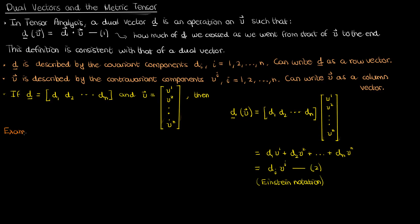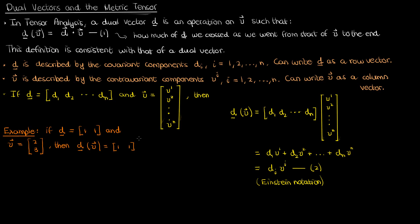Let's do a quick example with some numbers. If I have a dual vector given by the row vector [1, 1] and a regular vector given by the column vector [2, 3], then d of v is just the product of the row vector and column vector, which will turn out to be 1 times 2 plus 1 times 3, which is just 5.